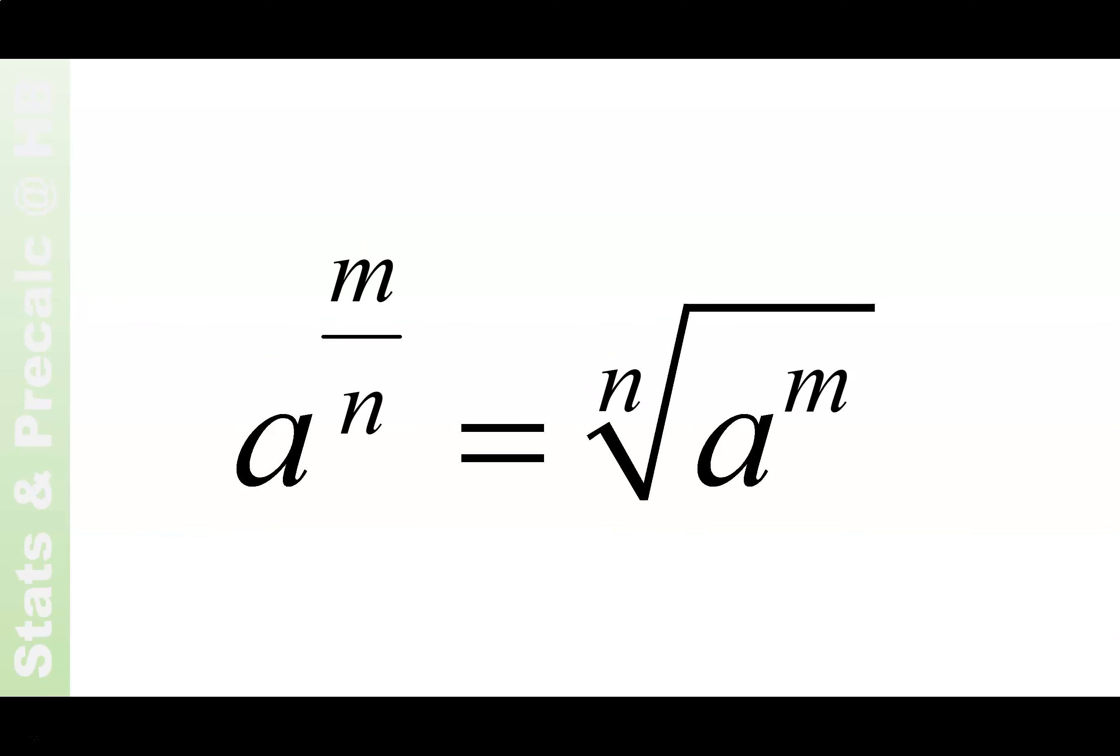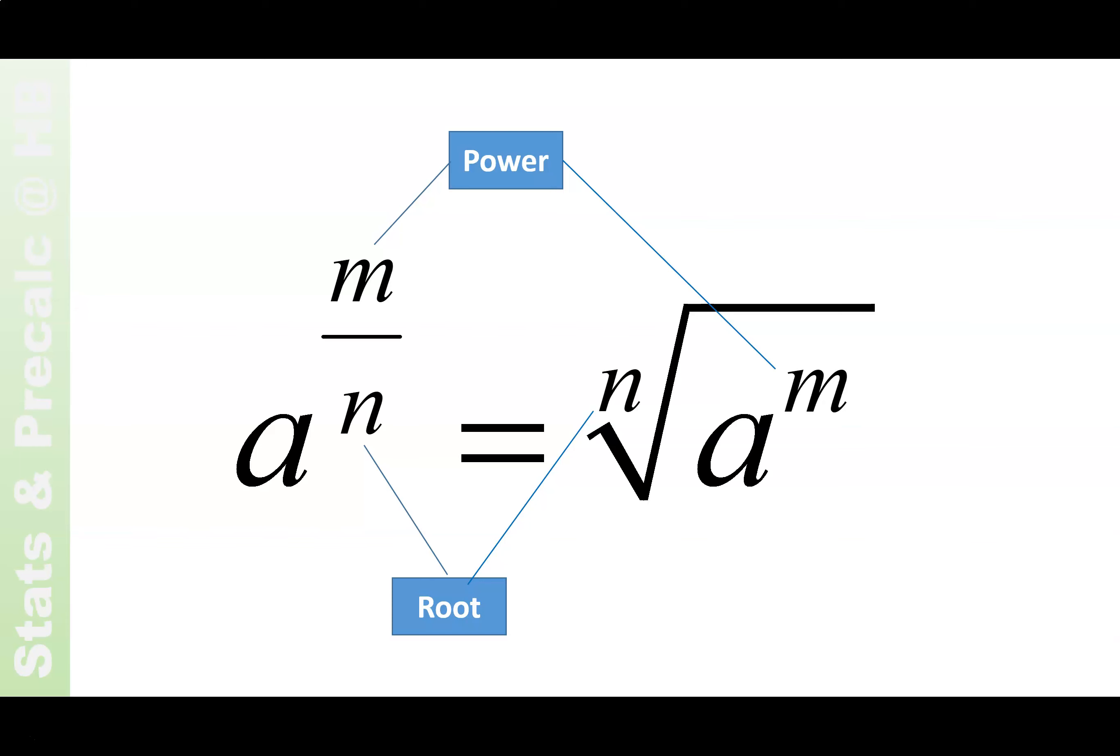You can also write it as the nth root of a to the m power, where the m is inside. The power can be inside the radical instead of outside. It depends on how you do it. It can be more useful one way or the other way. When we're simplifying these ones here, it's going to be more useful this way. So let's take a look.